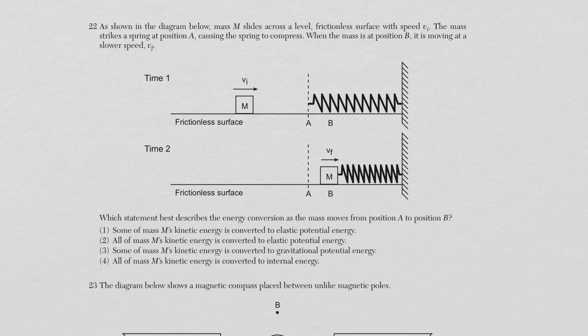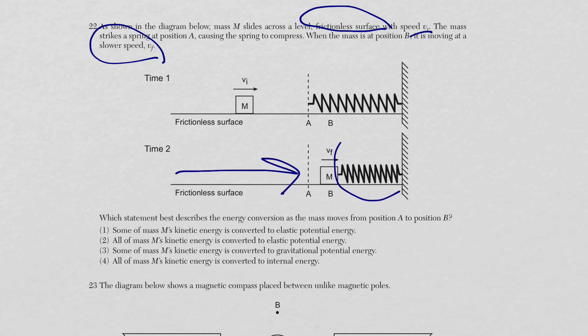Question 22: a mass slides across a frictionless surface and strikes a spring at position A, compressing it. At position B the mass is moving at a slower speed — not zero. Since it didn't stop completely, only some kinetic energy was converted into elastic potential energy — choice one.